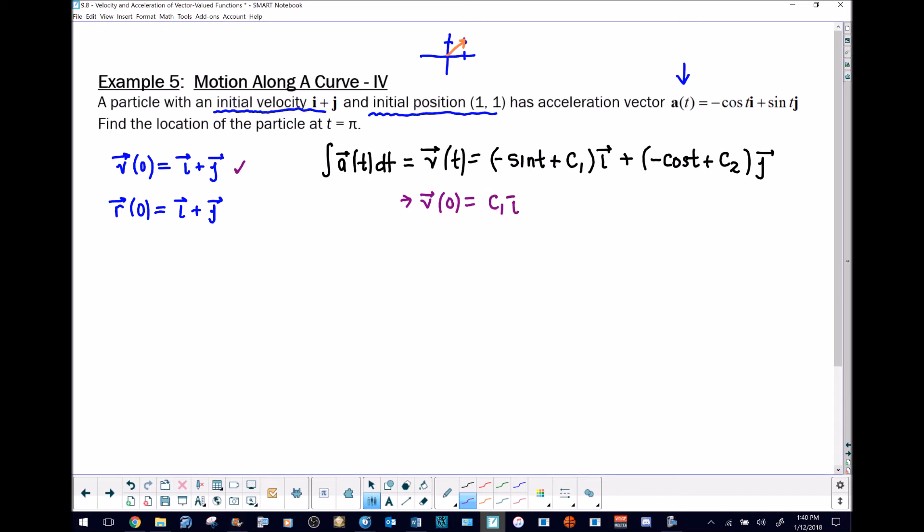If we do the same thing for this piece, cosine of zero is one, already a negative in front makes that minus, then we have c2 j. We were told this is all equivalent to i plus j. Now we match things up: c1 is equivalent to one, and if negative c2 equals one, then c2 equals negative one.